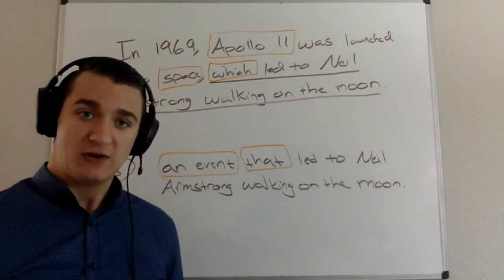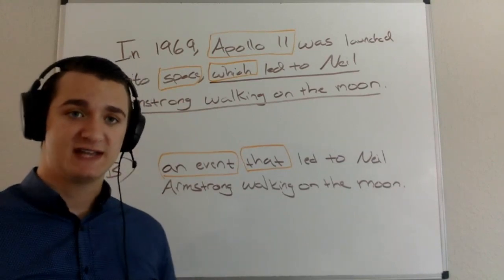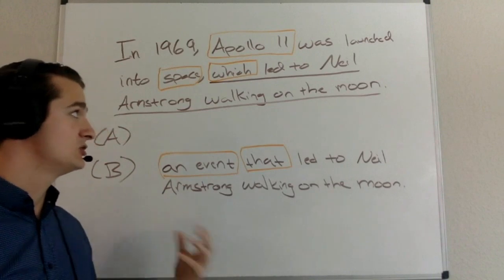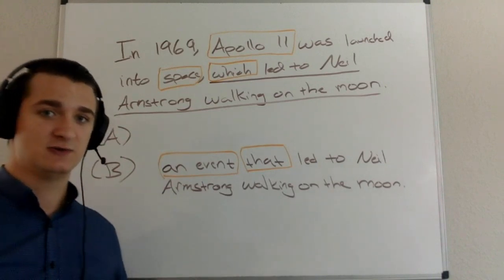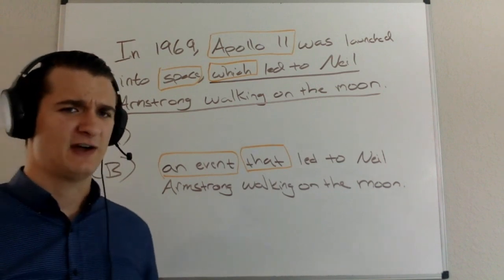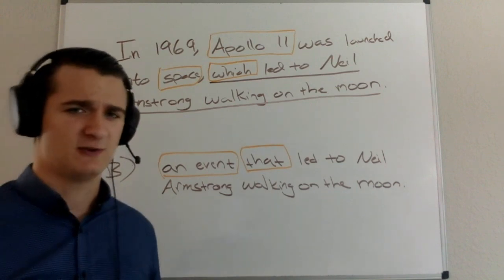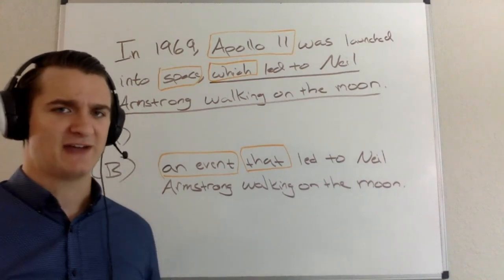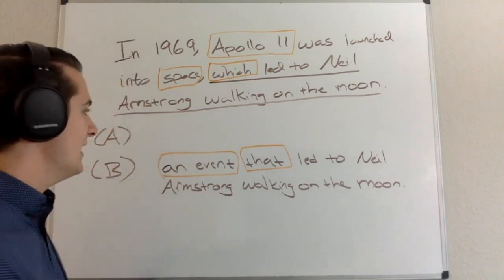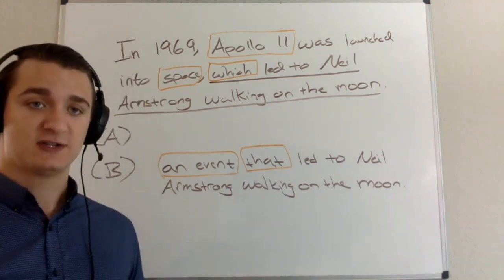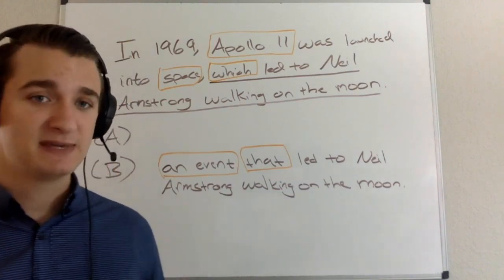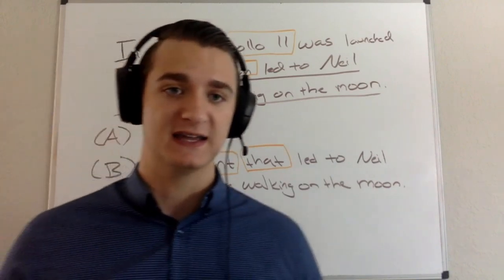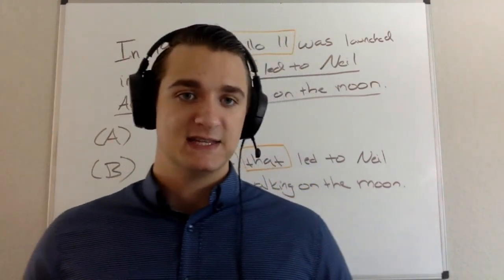However, even if B sounds awkward, because of good sentence correction process, I'm focused on definite errors. I notice in A I have a definite error — 'which' seems to refer to 'space,' which did not lead to Neil Armstrong walking on the moon. Even if I were to argue it referred to Apollo 11, a spacecraft did not lead to Neil Armstrong walking on the moon. So A is eliminated. Following good sentence correction process: definite error in A, A is out. B may sound a little awkward, but I don't want to go based on how things sound. B is the best answer choice here.